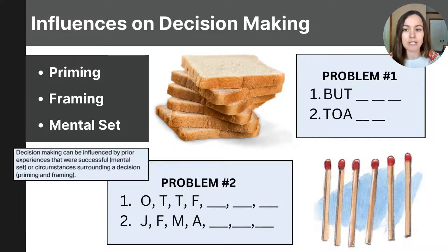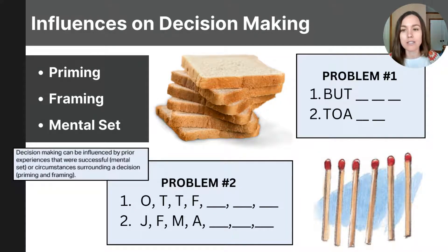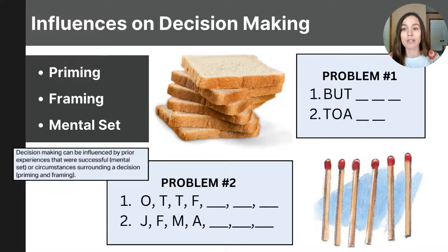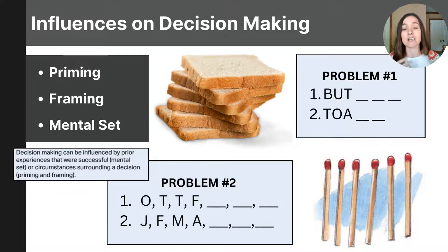Framing is similar, except it has to do with how the information itself is presented to you, and that is what influences your decision making. For example, if a health campaign presents a new dietary guideline as 90% effective in reducing heart disease, you might feel more positive about that guideline than if it was presented inversely — that 10% of people still get heart disease despite following the guideline. Your response would likely be less favorable, and it all comes down to how they framed that same information.